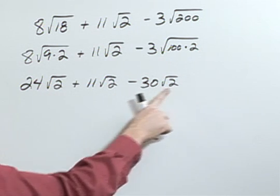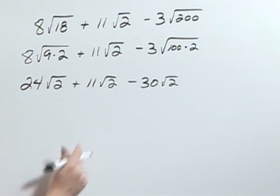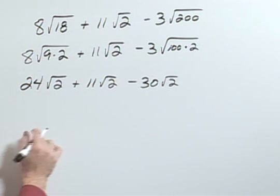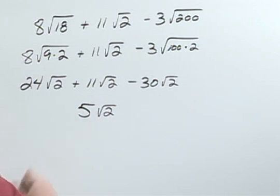And notice the difference now is that each of these have the square root of 2. So I want to think about the numbers out front. Combining all of these then would be 5 times the square root of 2.